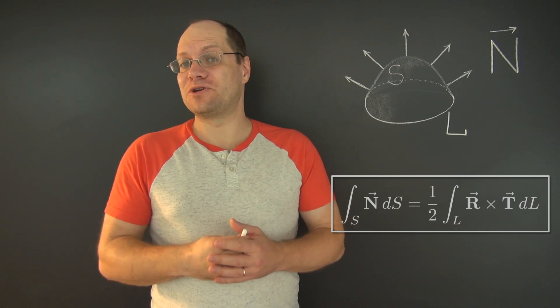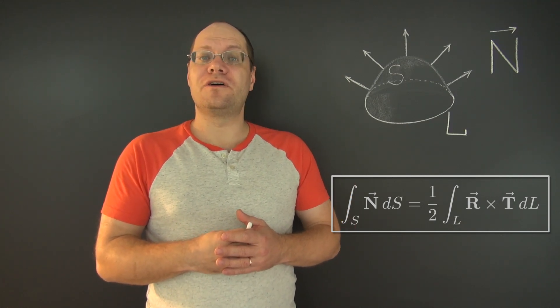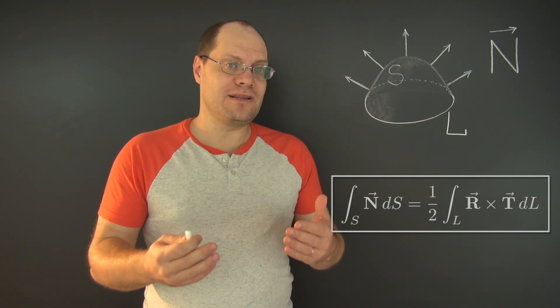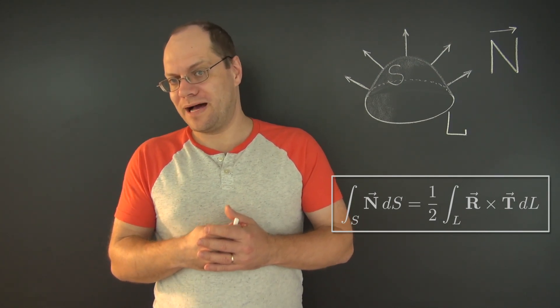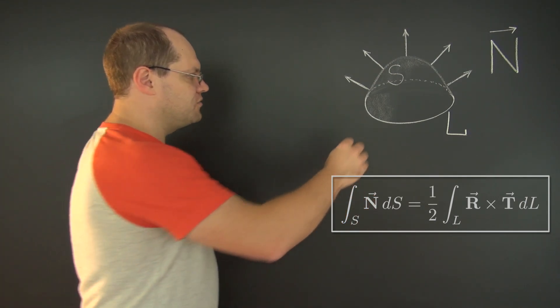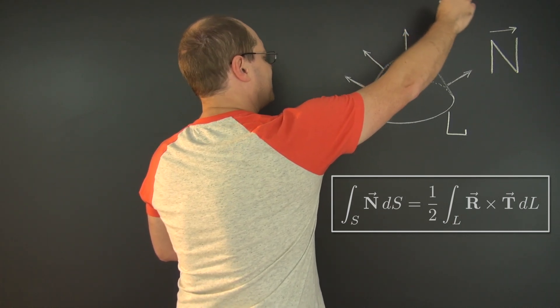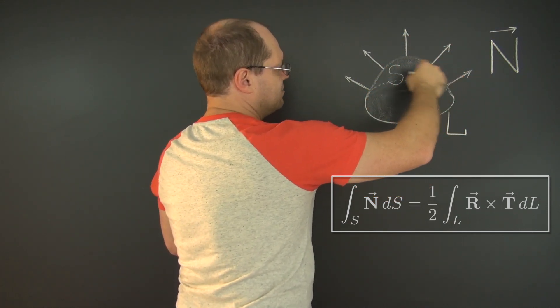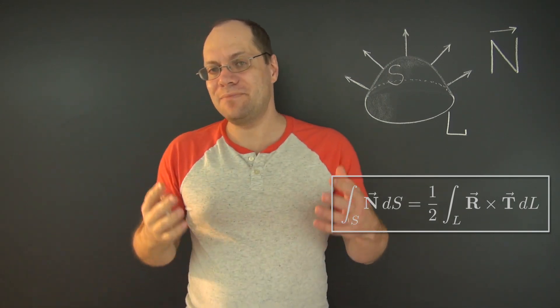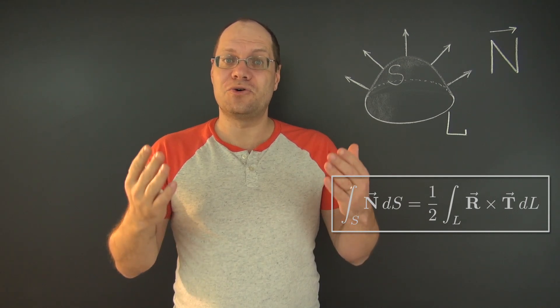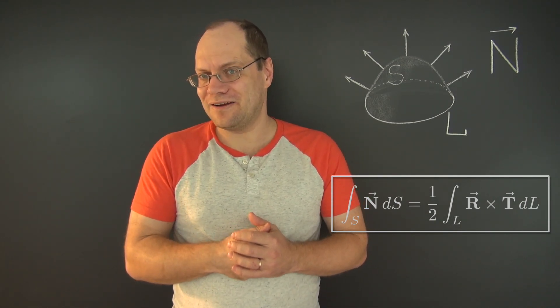Next, observe that this formula tells us that the integral of the unit normal over a surface patch depends only on the location of its contour boundary and not its shape. In other words, if there was another surface here, no matter how complicated, as long as it had the same contour boundary, it would have the same integral of normal. Now, this formula says so explicitly, so there's really nothing to add here,